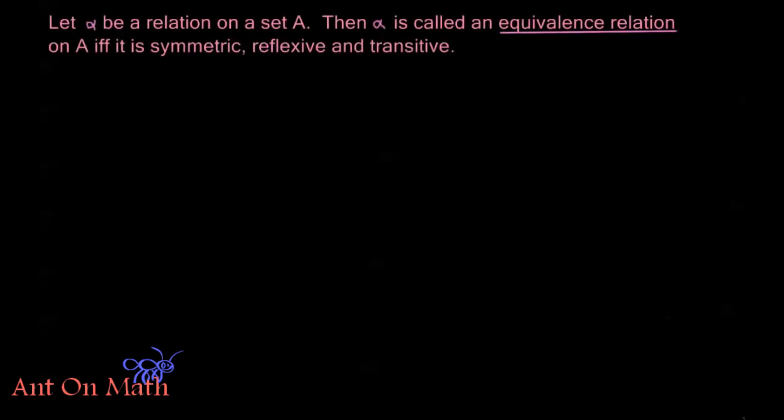They have a lot of very useful properties. Let alpha be a relation on a set A. Then alpha is called an equivalence relation on A if and only if it is symmetric, reflexive, and transitive.